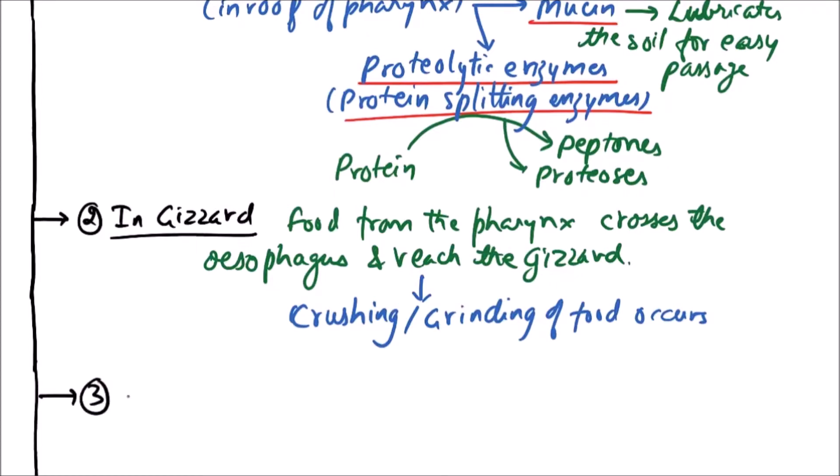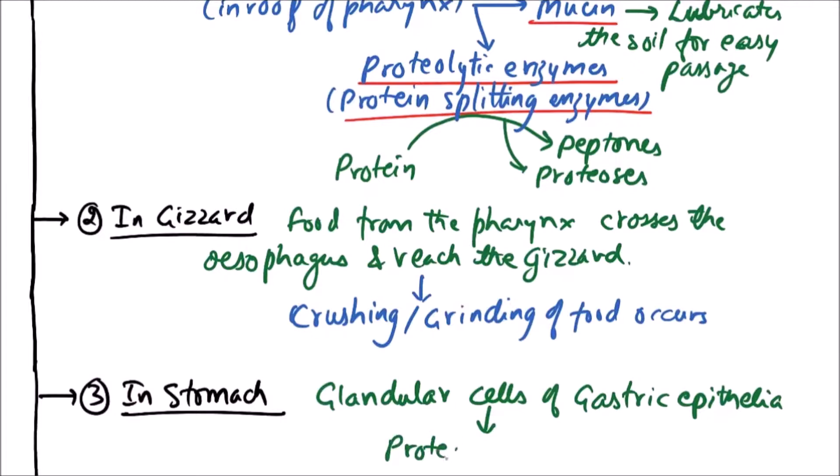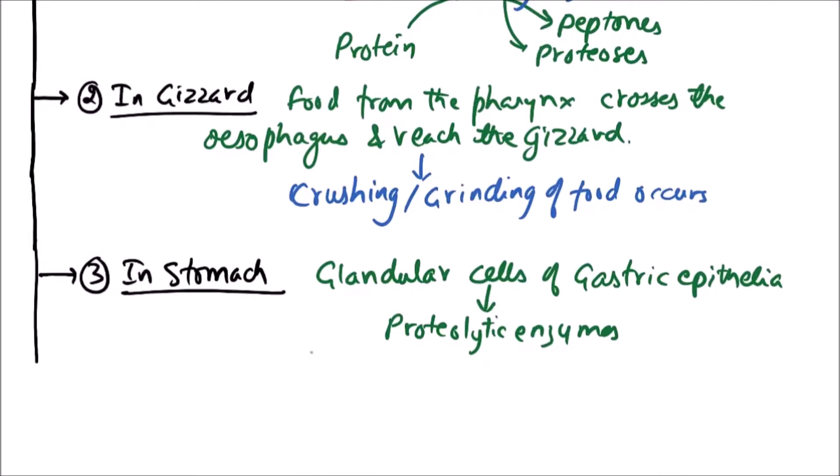Next step of digestion is observed in stomach. In stomach, glandular cells of gastric epithelia secrete protein digesting enzymes or proteolytic enzymes. These proteolytic enzymes digest the remaining protein.